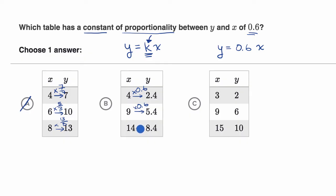14 times six is 84, so 14 times 6 tenths would indeed be 8.4. So this looks like our choice. And we can verify that this would not be the case.